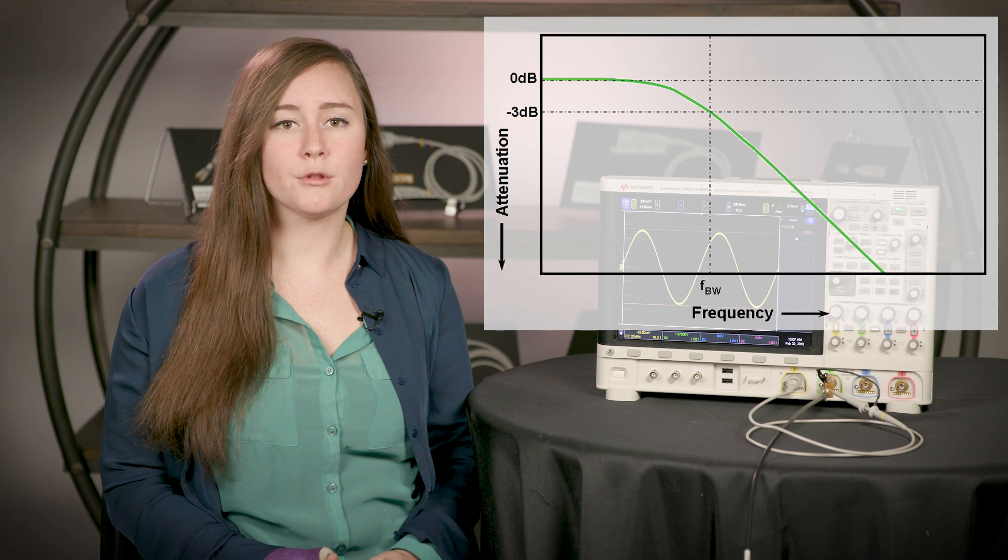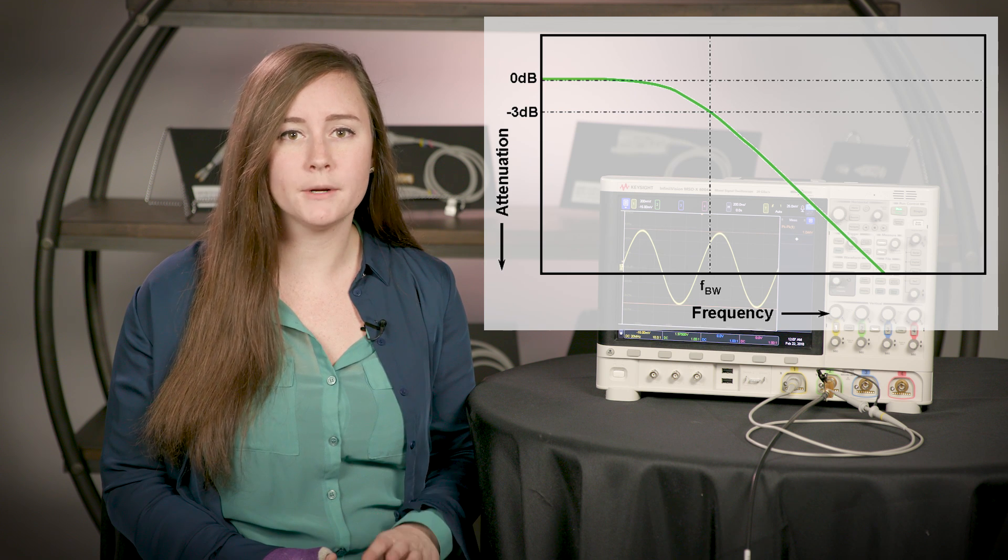The easiest way to understand probe bandwidth is by learning this theory. The bandwidth is defined by the point at which the frequency components passing through the probe are attenuated or decreased by 3 dB. In other words, the amplitude of your signal is reduced by 70.7% of what it should be.